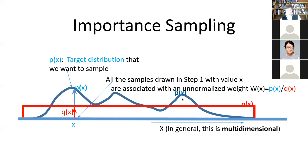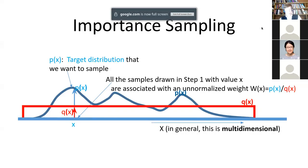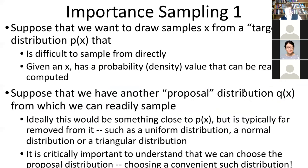You first sample from a proposal distribution, and then not all samples are treated equally — they're associated with weights. If a sample comes from way out in the tails, we give it a really low weight because we expect very few of those in the target. If it comes from near a high peak of the target, we upweight it. The weight is the ratio of the target distribution's value to the proposal distribution's value at that point.